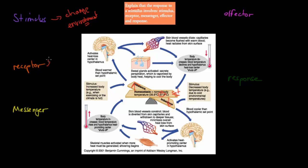Receptors are the things that detect the change. In blood vessels, you have heat inside the plasma, and receptors picking up that change so they can sense the temperature — like a thermometer of your blood. So receptors are the things that detect that change.